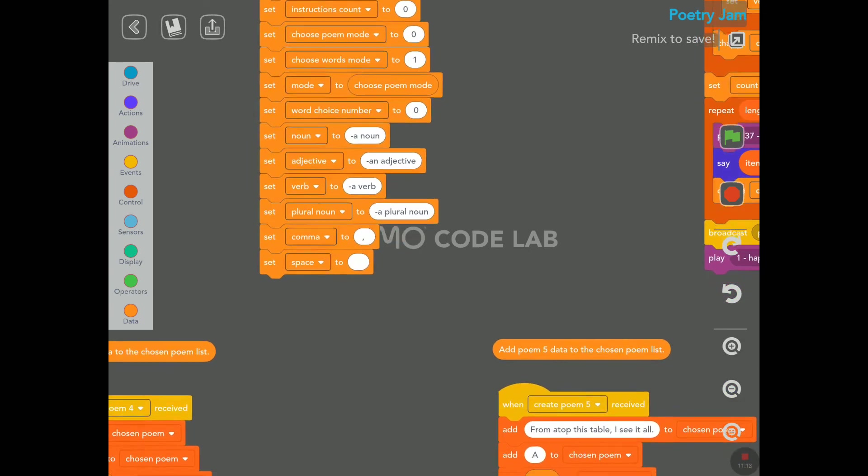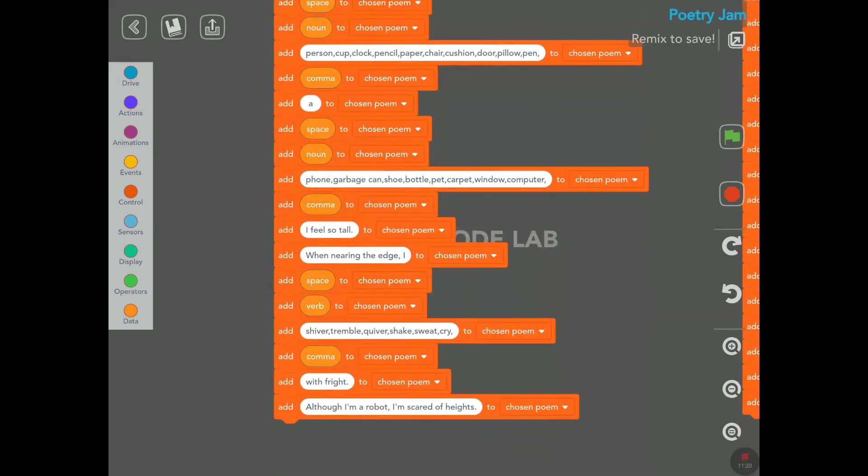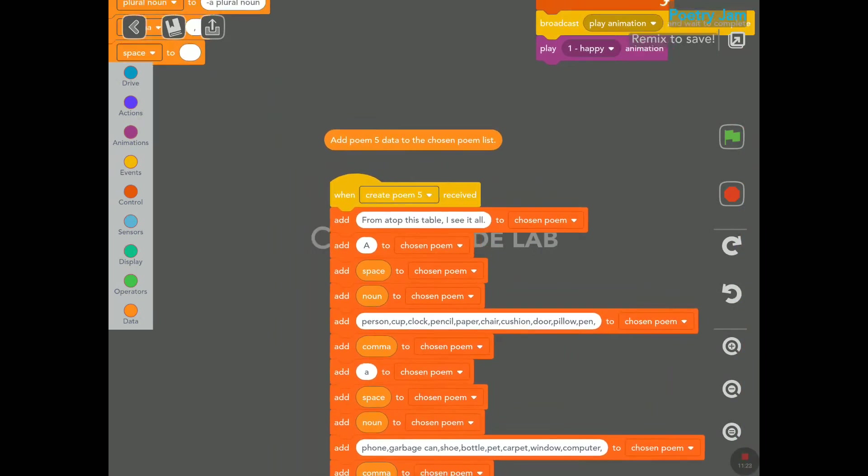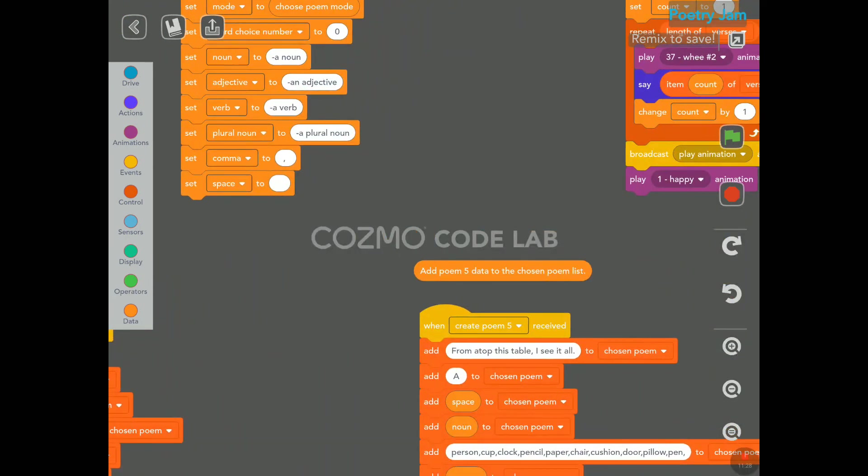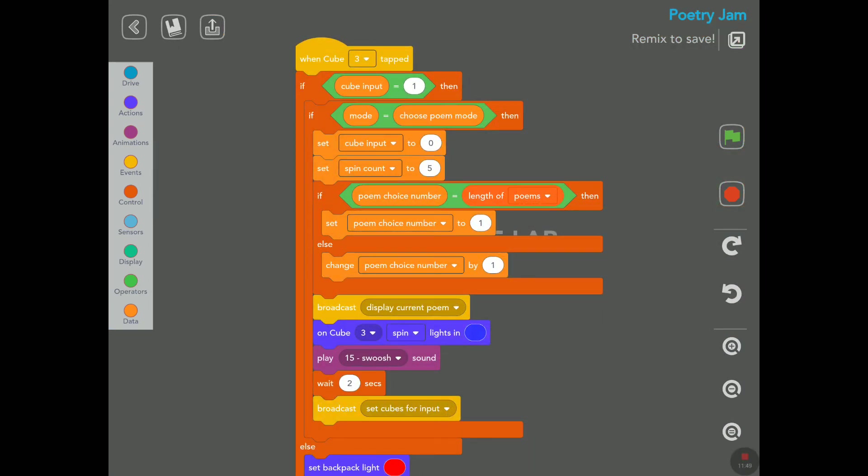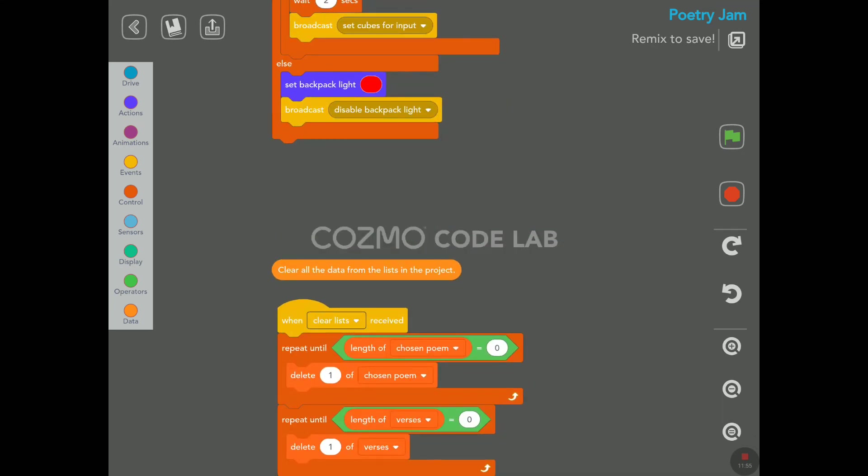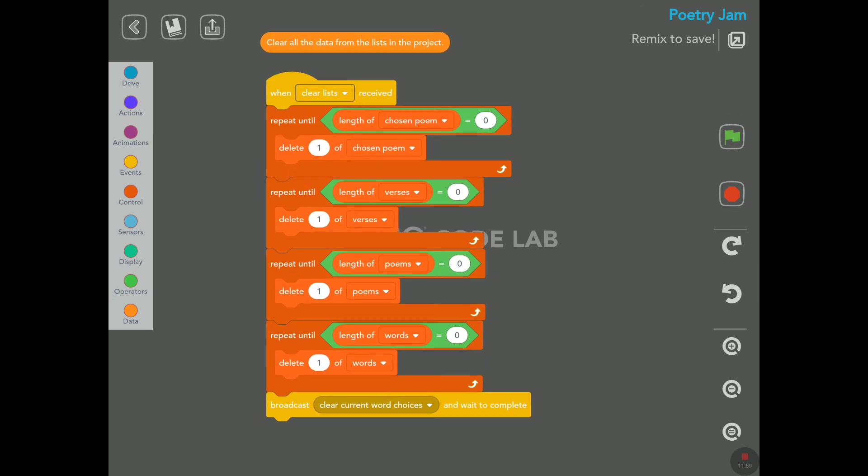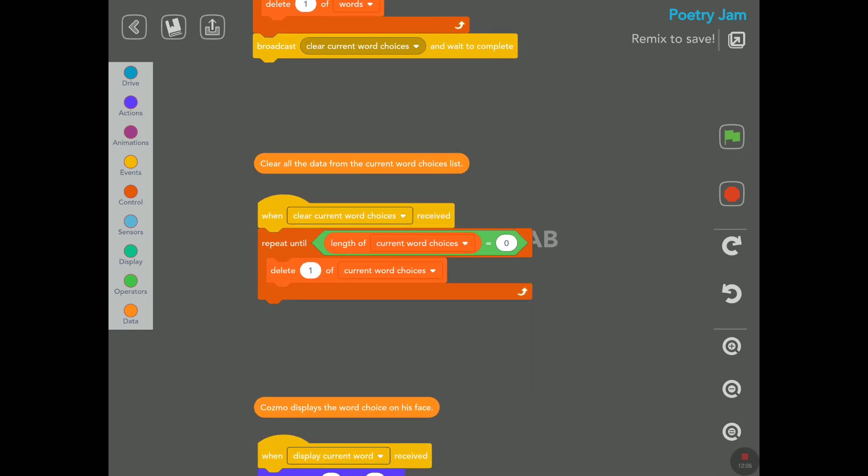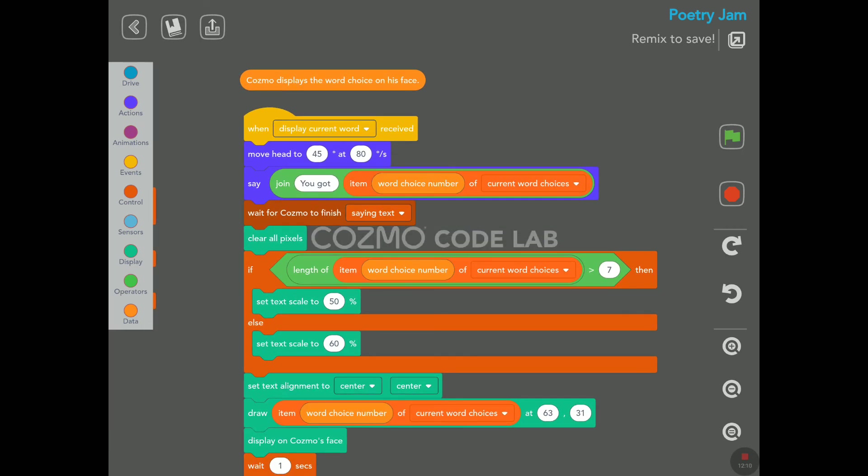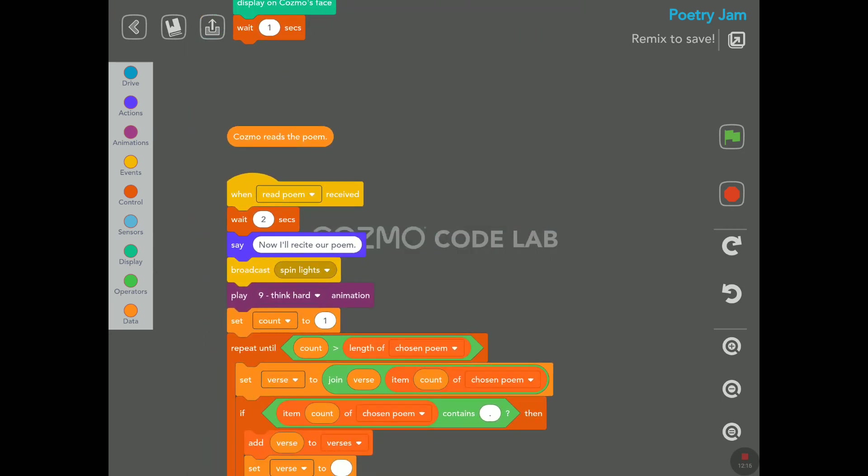Cosmo displays the currently selected poem on his face. Set the starting values for all the variables. I don't know why this is not at the beginning of the code. And here we have add poem five data to the chosen poem list, like the ones we saw before. Did I show four? I'm not sure. Four is here, poem four. So let's go back to the top. And the last loop for the last cube number three, this is what happens when you tap on cube number three. This loop here is clear all the data from the list in the project. Clear all the data from the current word choices list. Cosmo displays the word choice on his face.